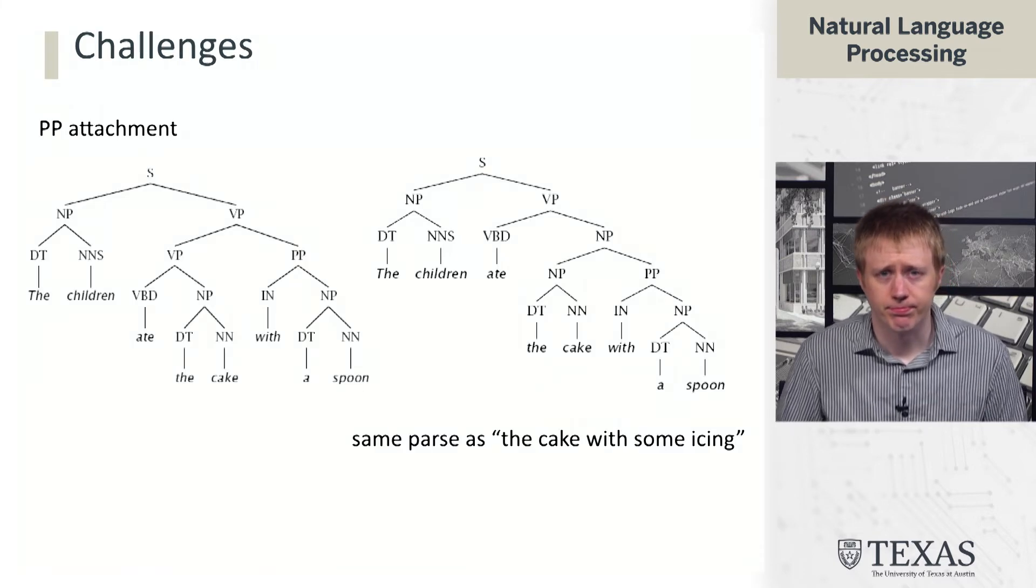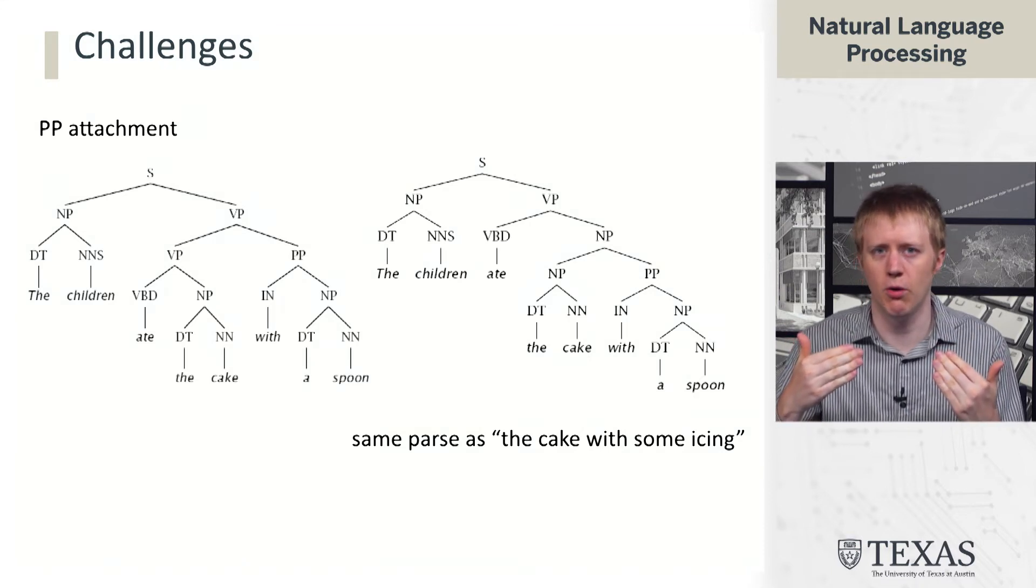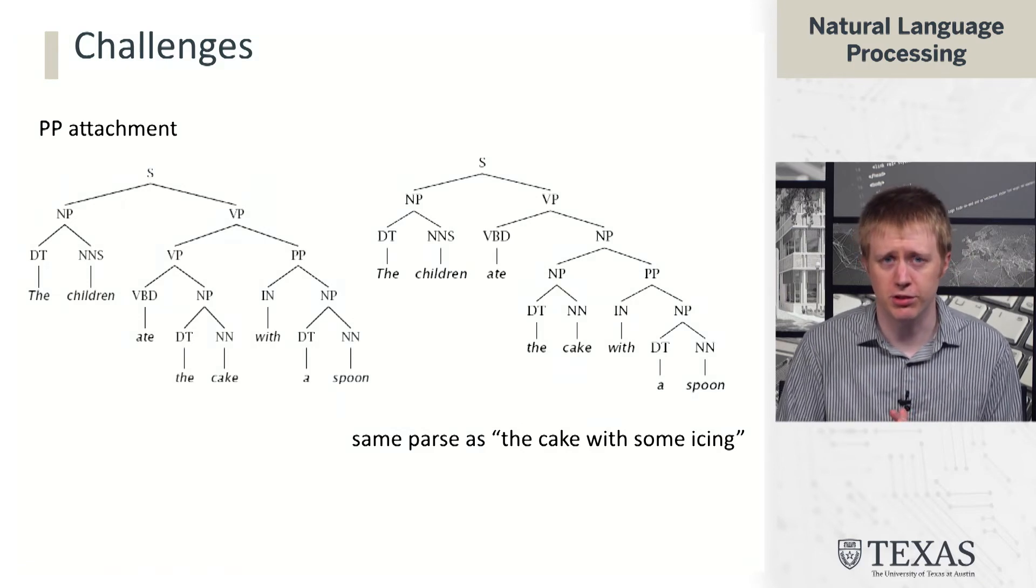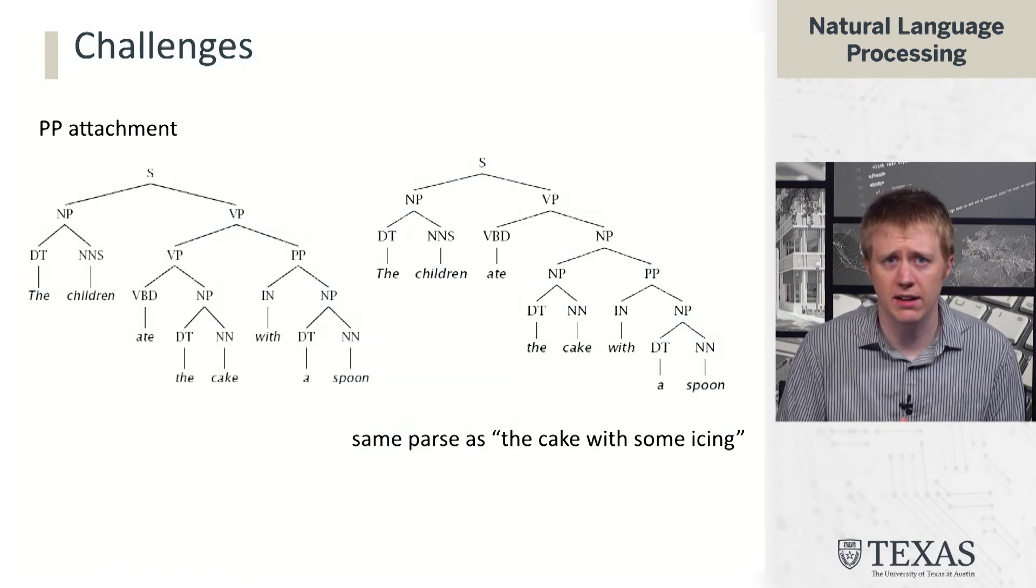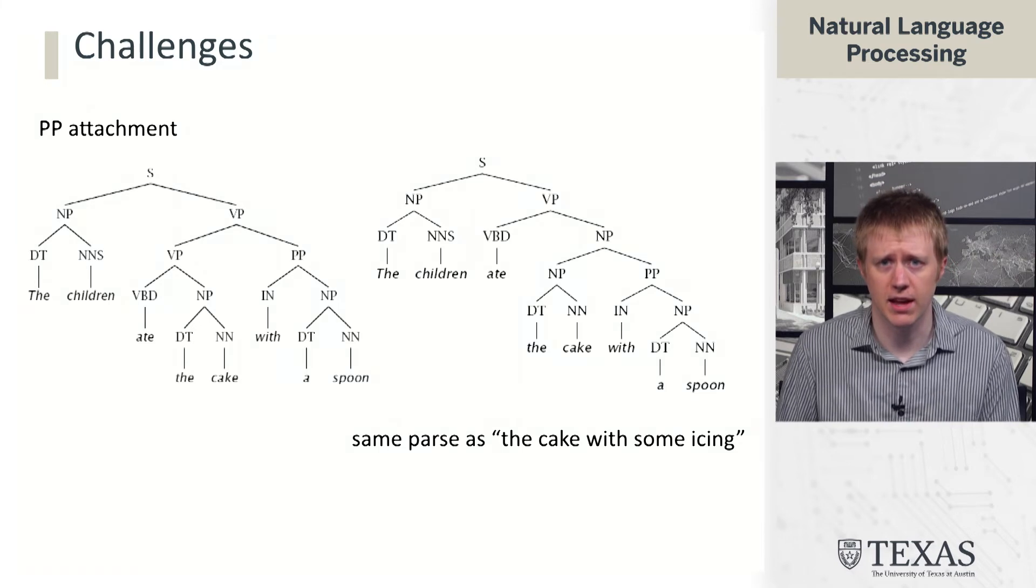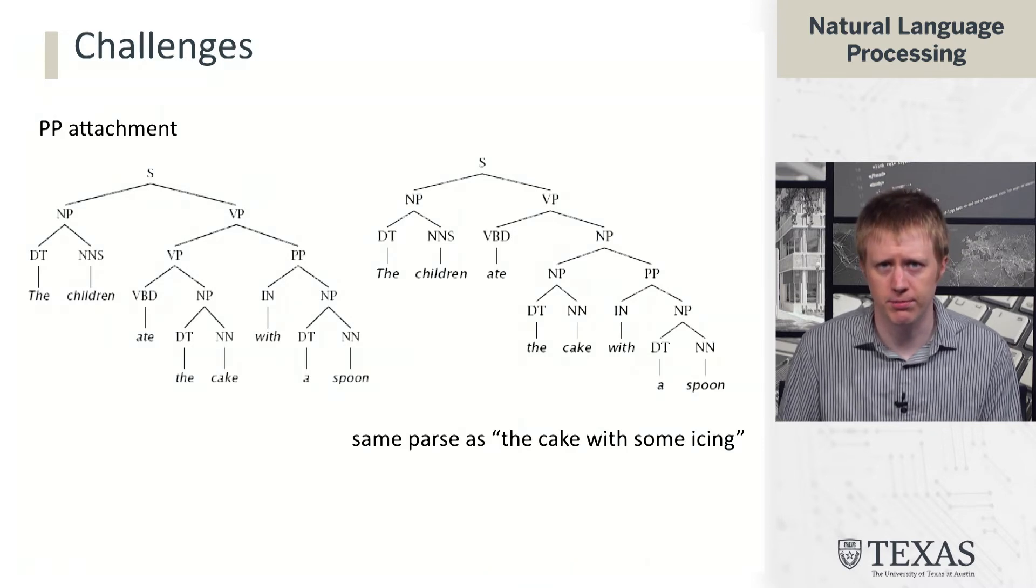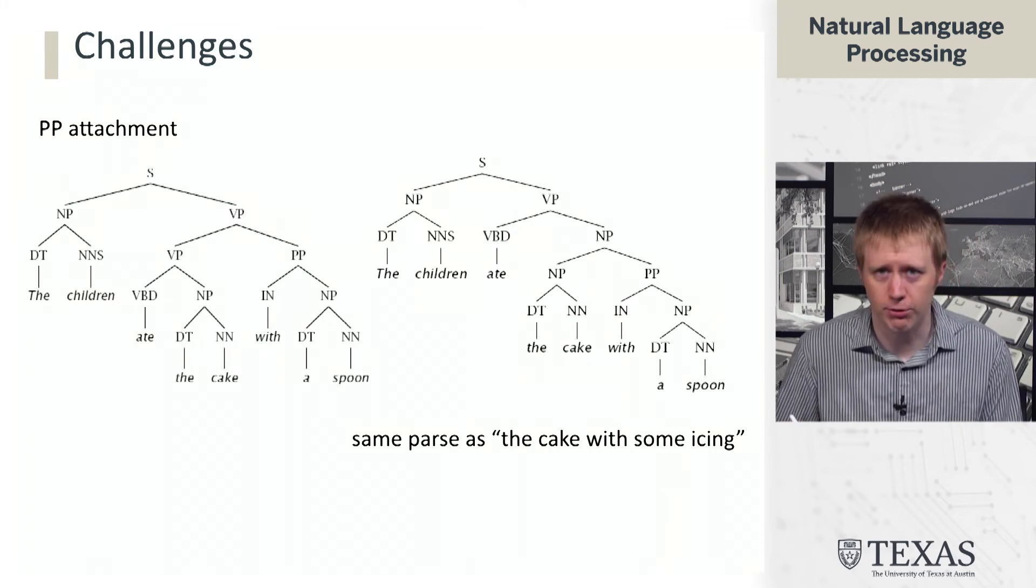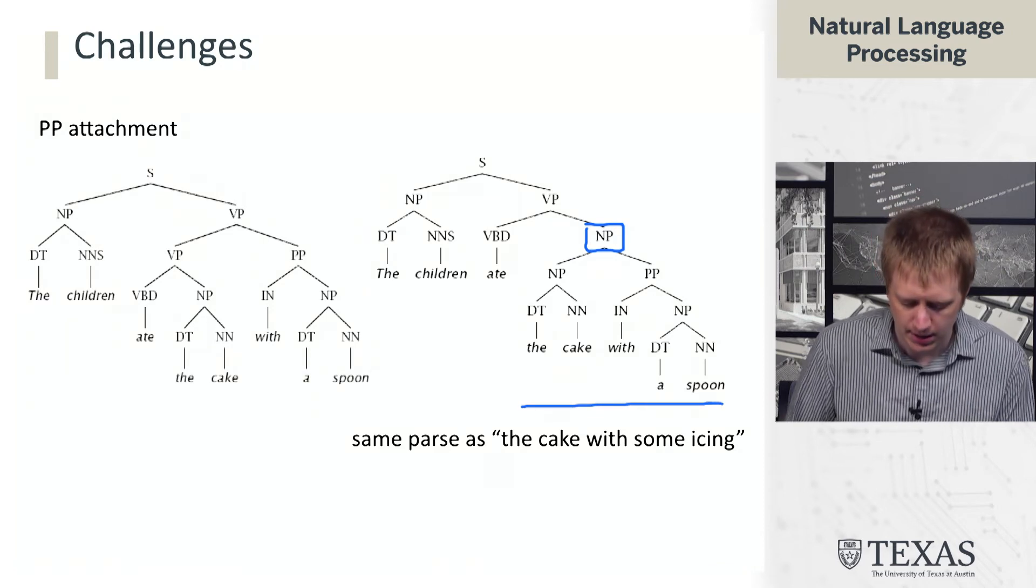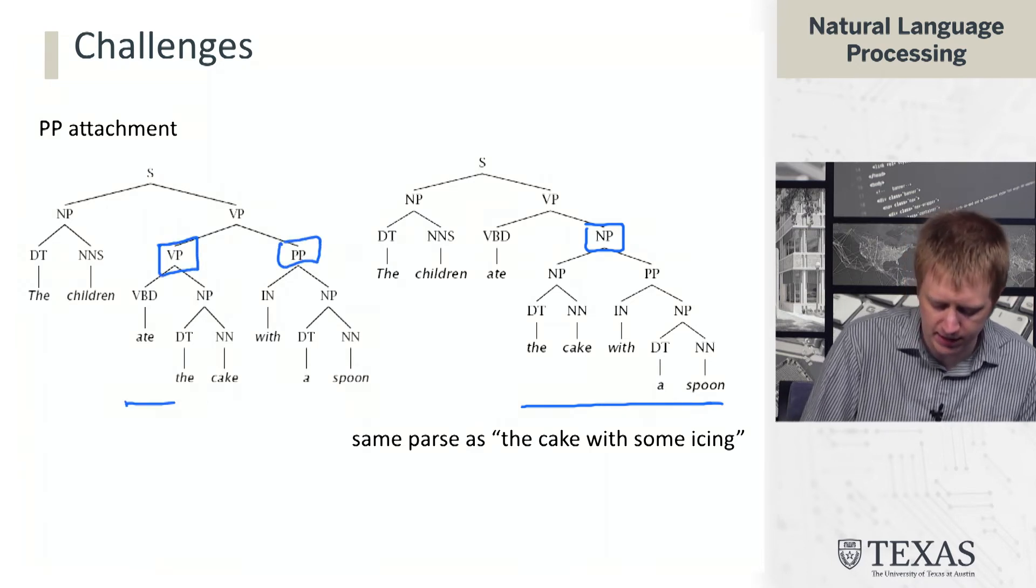So what's hard about parsing? We've seen that these analyses can be complicated, but we don't necessarily know why this is going to be hard from the perspective of an NLP system. This is a classic example of prepositional phrase attachment. We have two analyses of the same sentence here: The children ate the cake with a spoon. And what I want you to do is I want you to look at these and try to decide what meaning each of these corresponds to. And I'll give you a hint, which is that on the right here, we have a noun phrase that corresponds to the cake with a spoon. And on the left, we don't have that. We instead have a verb phrase and a prepositional phrase: ate the cake with a spoon.